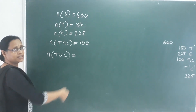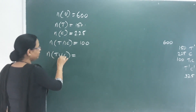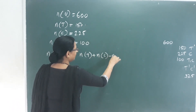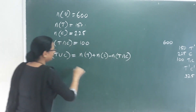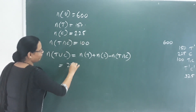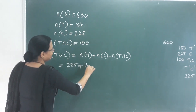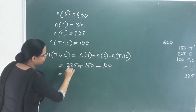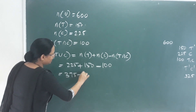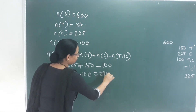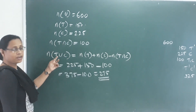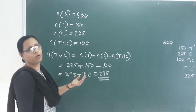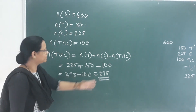We find the number of T union C: number of tea plus number of coffee minus number of T intersection C. That is 225 plus 150 minus 100, which equals 375 minus 100, giving us 275 students.